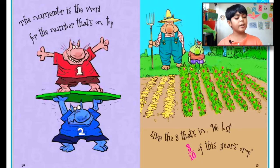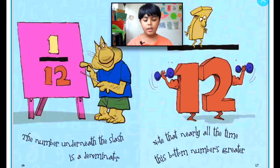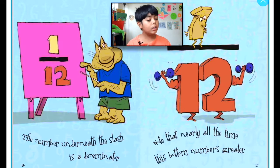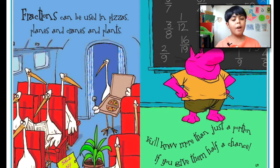The numerator is the word for the number that's on top, like the three in 'we lost three-tenths of the ears crop.' The number underneath the slash is the denominator — note that nearly all the time this bottom number is greater.